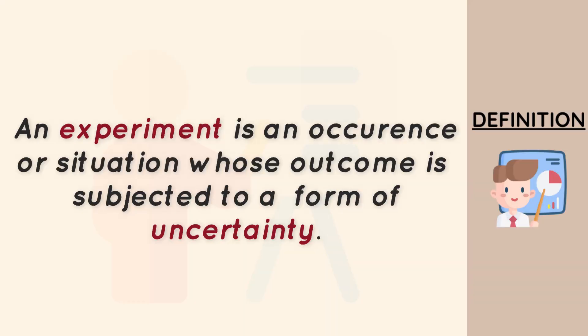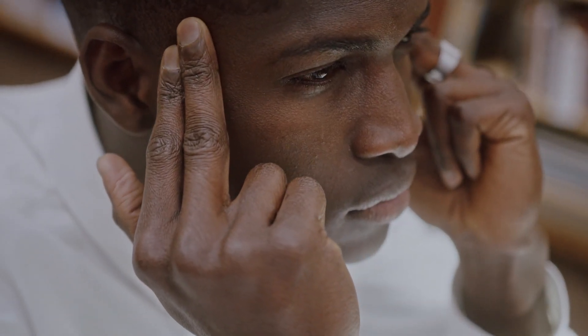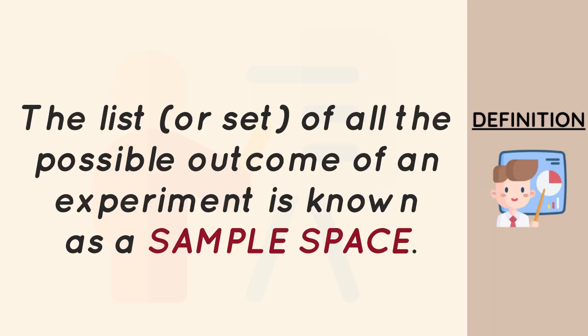Before I define what a probabilistic distribution is, I would like to go back to explaining the concept of an experiment. Basically, an experiment is an occurrence whose outcome is uncertain — if I have something happening and I cannot predict the outcome, then I have an experiment. The list of the possible outcomes of an experiment is known as a sample space.